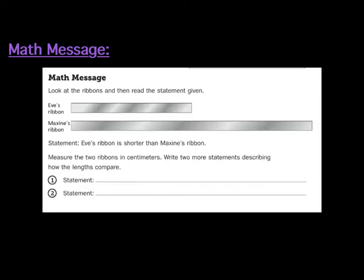Our math message today is this. I want you to look at the ribbons and then read the statement given. So we've got a ribbon for Eve and we've got a ribbon for Maxine. The statement is this: Eve's ribbon is shorter than Maxine's ribbon. Measure the two ribbons in centimeters. Write two more statements describing how the lengths compare.